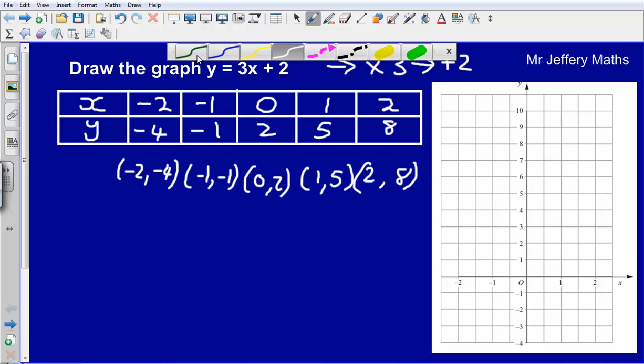All that I need to do now is simply plot these onto my graph. So the first one is minus 2, minus 4. That is all the way down the bottom here. Remember that when I am plotting these coordinates I go along the corridor first, so along the x axis, and then up or down the stairs after that.